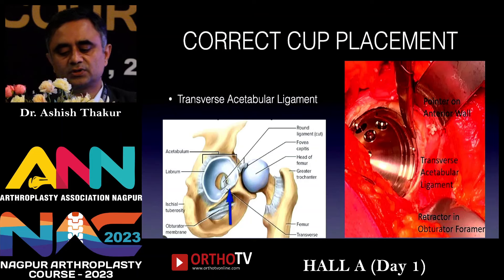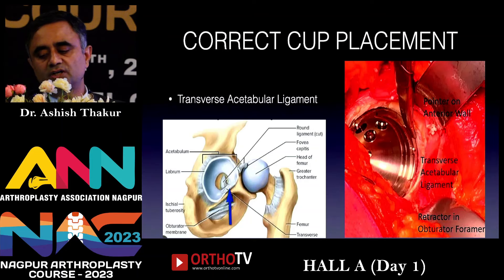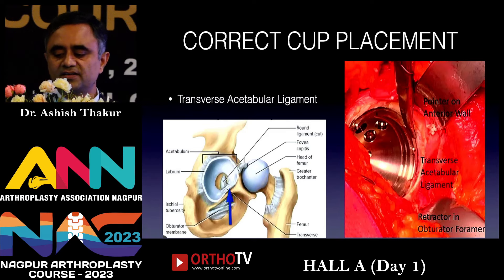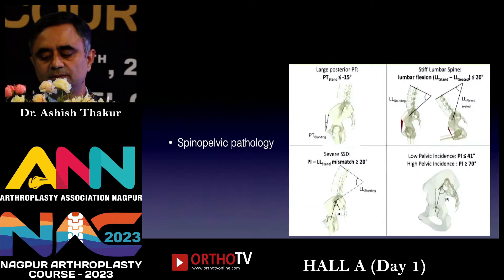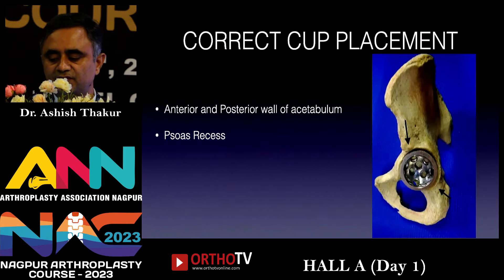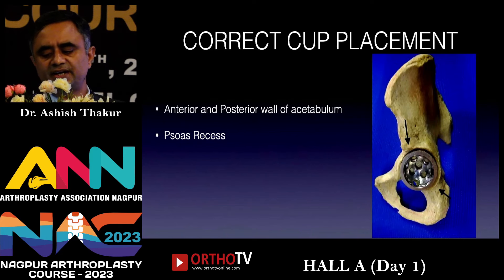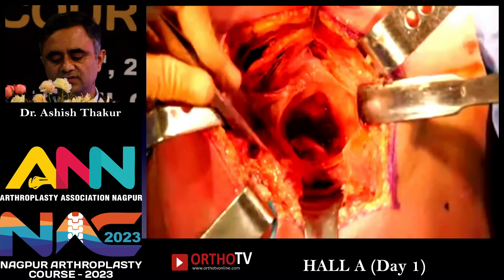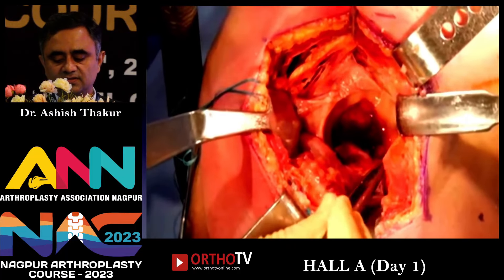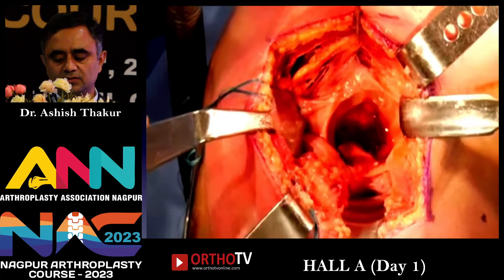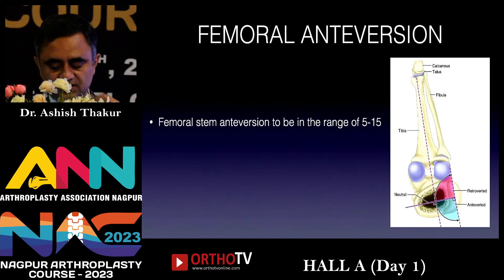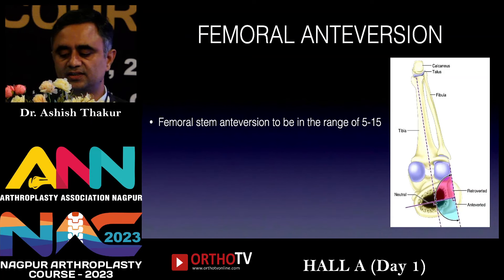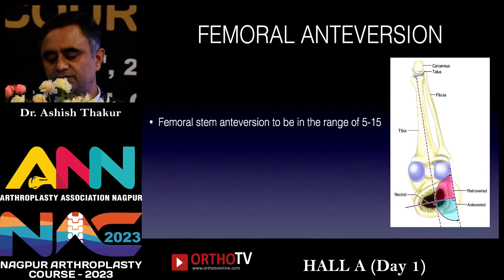For cup placement, always try to follow more than one point of reference. First would be the TAL — the cup should be parallel and just superior to the TAL. Instrumentation provided by companies for cup placement is subject to different variables and cannot be totally depended upon. Another checkpoint is to keep the cup flush or slightly tucked into the anterior wall and flush or slightly prominent on the posterior wall. The SOAS recess is another reference for cup positioning. Femoral component anteversion should be in the range of 5 to 15 degrees, or combined anteversion in the range of 25 to 50 degrees, typically 30 to 40 degrees.